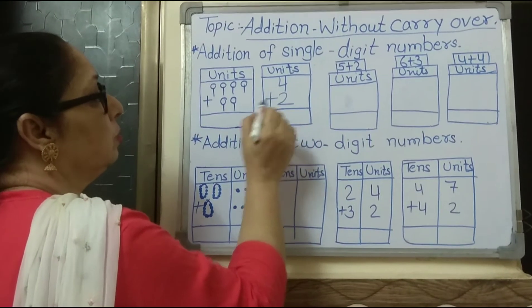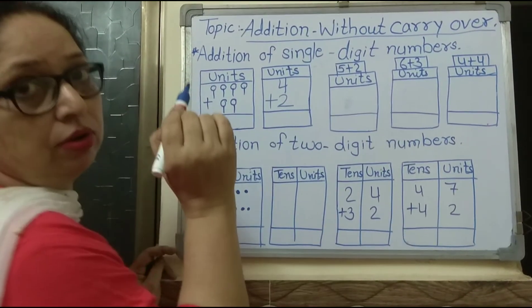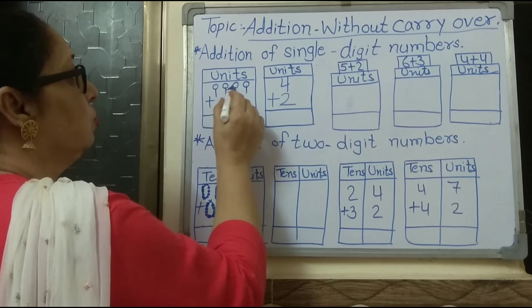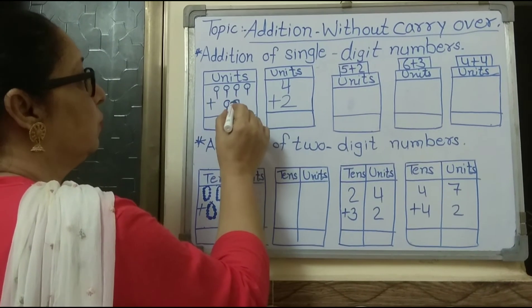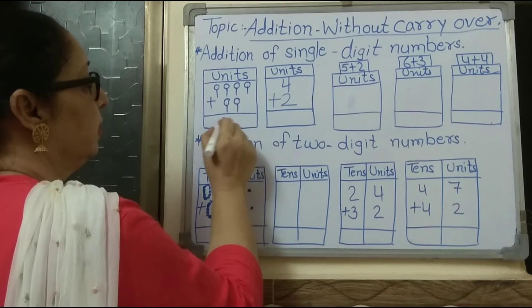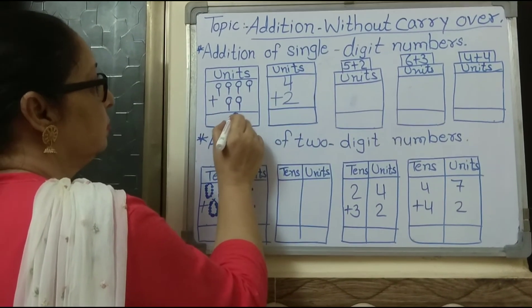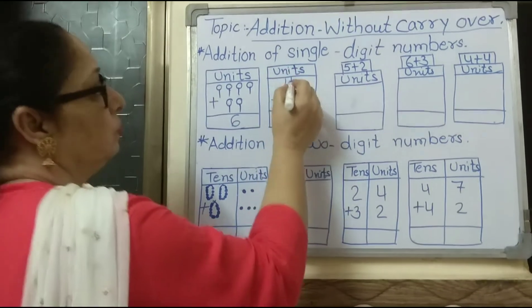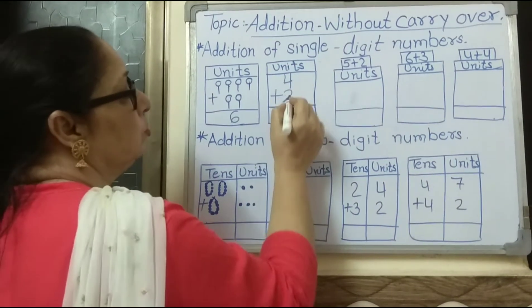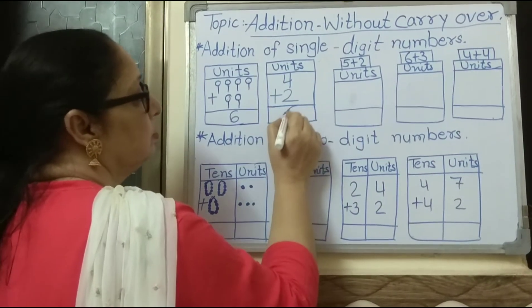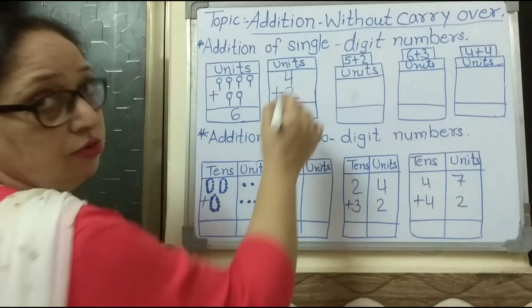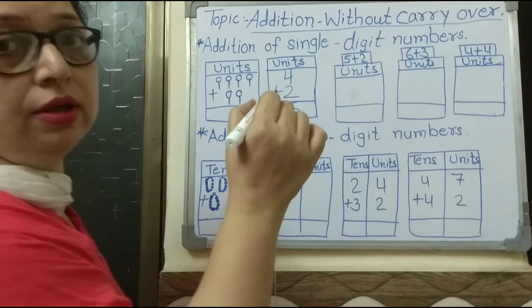How many units are there altogether? One, two, three, four, five, six. Six units are there. Four plus two is equal to six. Six units is the answer.